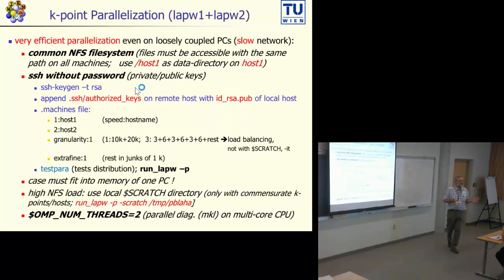We have successfully, hopefully, installed Wien2K and we want to do bigger calculations. We have a powerful small little cluster and we want to run k-point parallelization. This is a very efficient parallelization, even on loosely coupled PCs with just gigabit network.